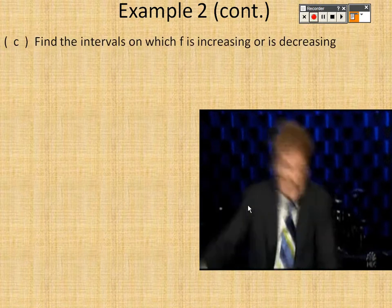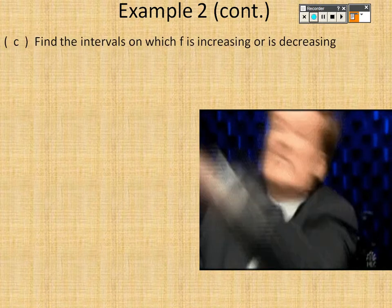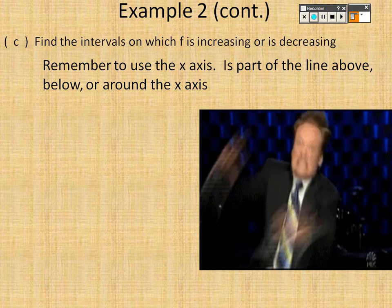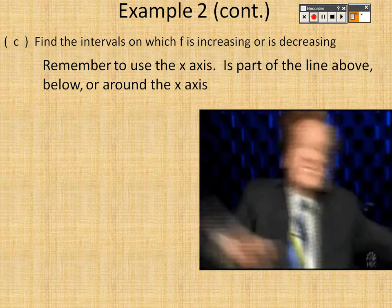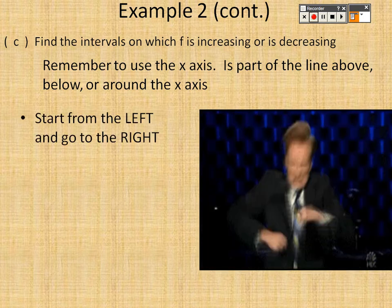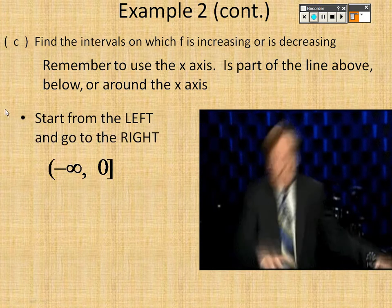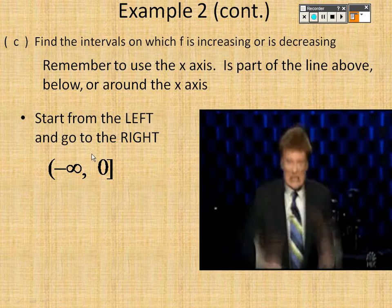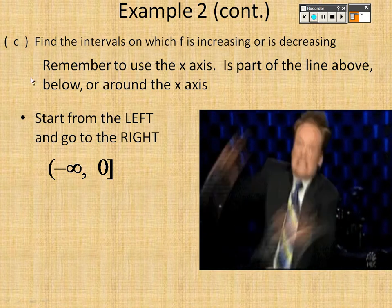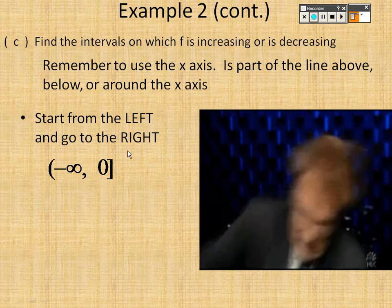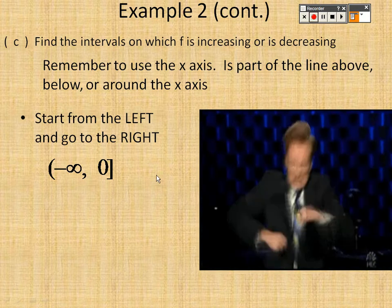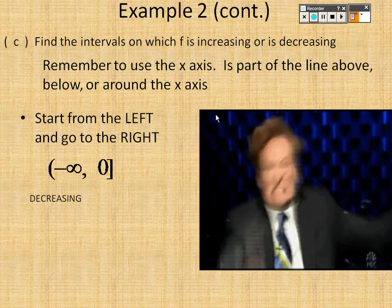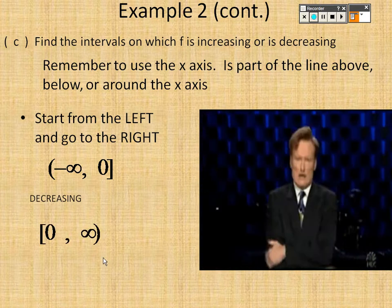We want to find the interval where it's increasing and decreasing. Remember to use the x-axis. The graph is a V shape, so from negative infinity to zero it's going down — it's decreasing. Then from zero to infinity it's going back up, so it's increasing on that interval.